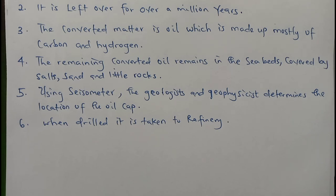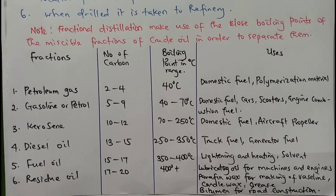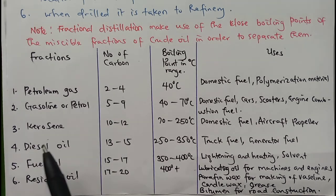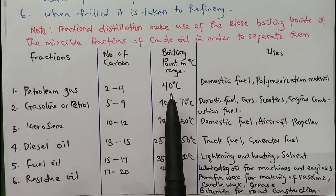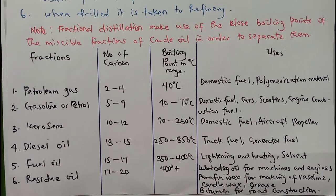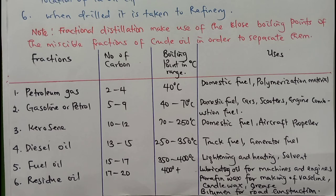Petroleum gas has carbon numbers between 2 and 4, with a boiling point up to 40 degrees Celsius. It is mostly used for domestic fuel, and as combustion fuel for cars and scooters. Kerosene has carbon numbers from 10 to 12, and a boiling point range of 70 to 250 degrees Celsius. It is used as domestic fuel and for aircraft propellers. Some people doubt that kerosene is used for aircraft propulsion, but it is.